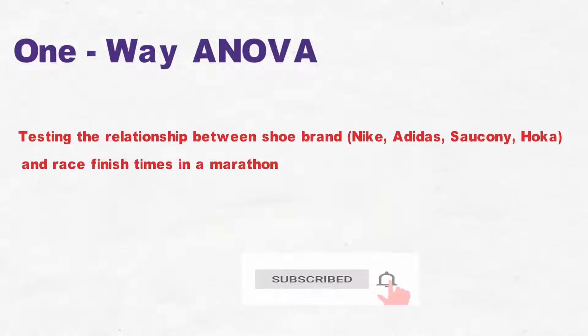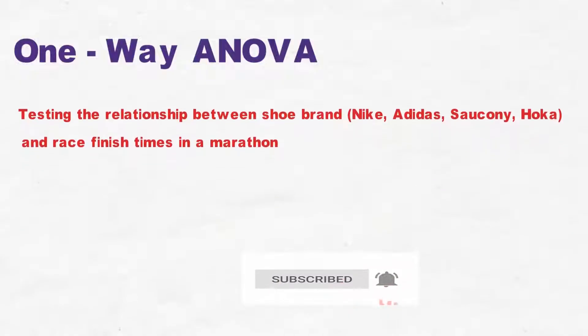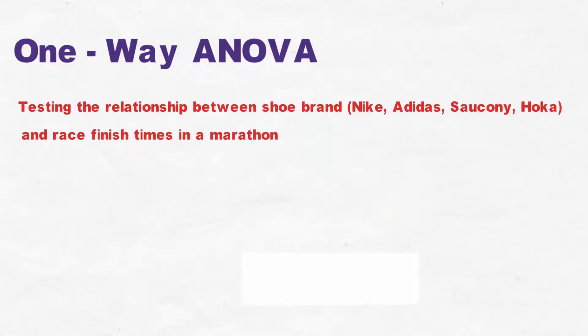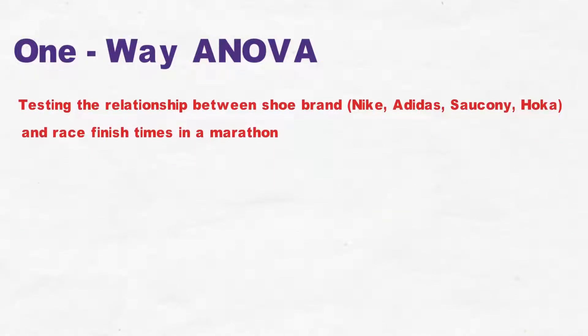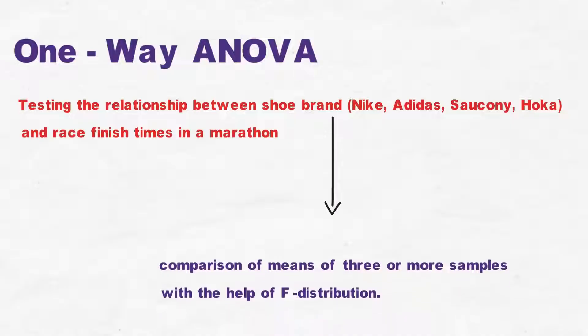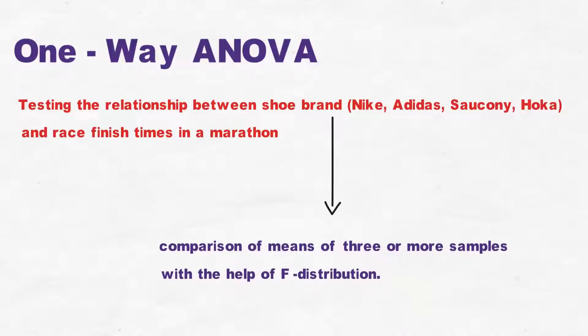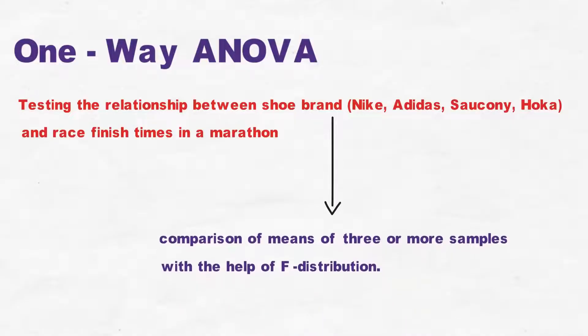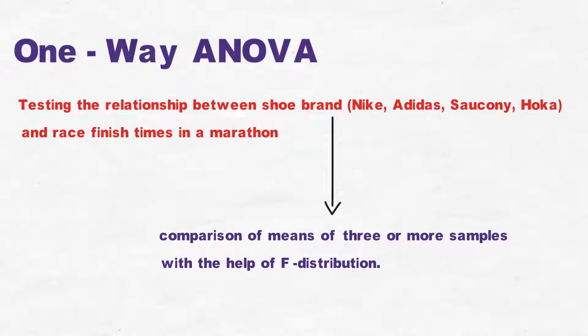is a hypothesis test in which only one categorical variable or single factor is considered. It is a technique which enables us to make a comparison of means of three or more samples with the help of F-distribution. It is used to find out the difference among its different categories having several possible values.